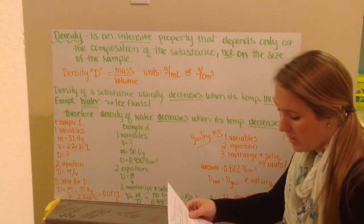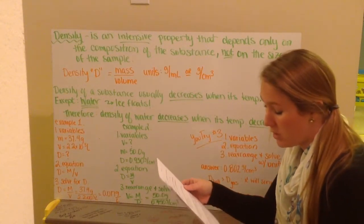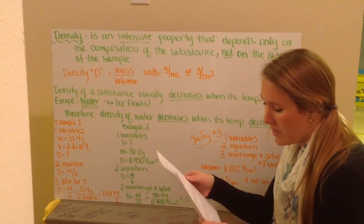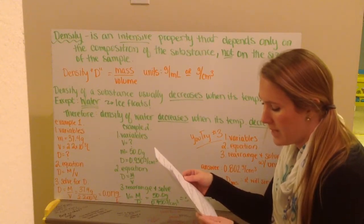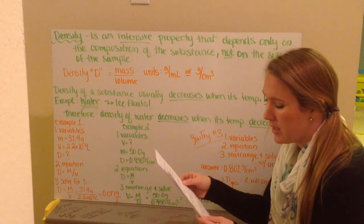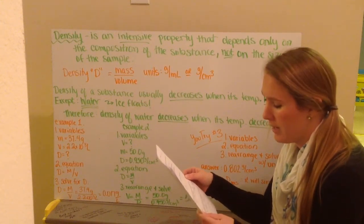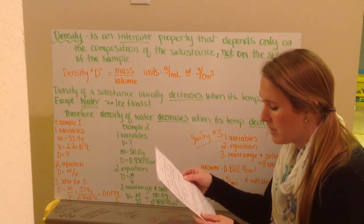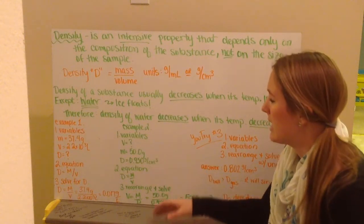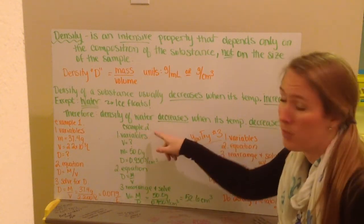Example number two asks what is the volume in cubic centimeters of a sample of cough syrup that has a mass of 50 grams. The density of cough syrup is 0.950 grams per centimeters cubed. Again, we first want to write down our variables that we have.